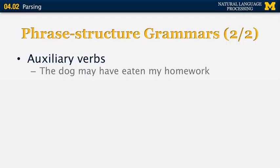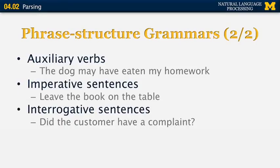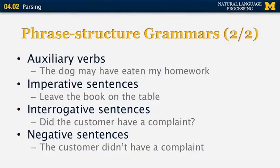Some grammars include additional constituents such as auxiliary verbs — for example, 'the dog may have eaten my homework,' where 'may' and 'have' are auxiliary verbs. Imperative sentences describe orders, such as 'leave the book on the table,' which has no explicit subject. Interrogative sentences end in question marks, such as 'did the customer have a complaint?' There are yes/no questions like this and wh-questions using where, when, and so on. There can also be negative sentences like 'the customer didn't have a complaint,' where 'didn't' is the expression of negation.